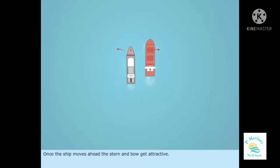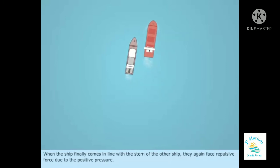Once the ship moves ahead, the stern and bow get attractive. When the ship finally comes in line with the stern of the other ship, they again face repulsive force due to the positive pressure.